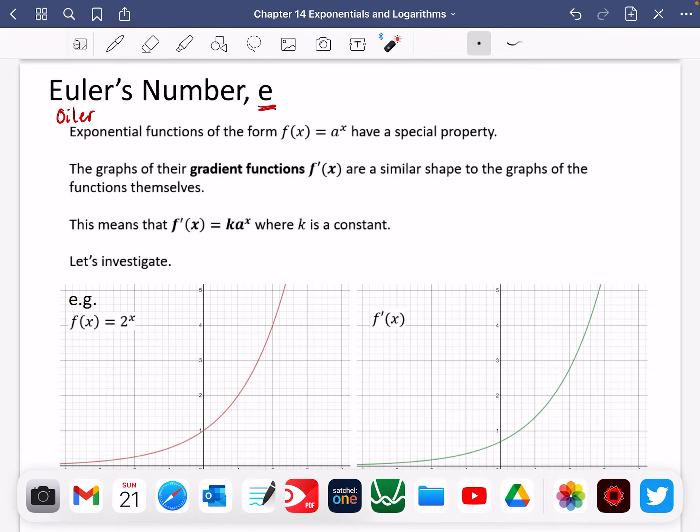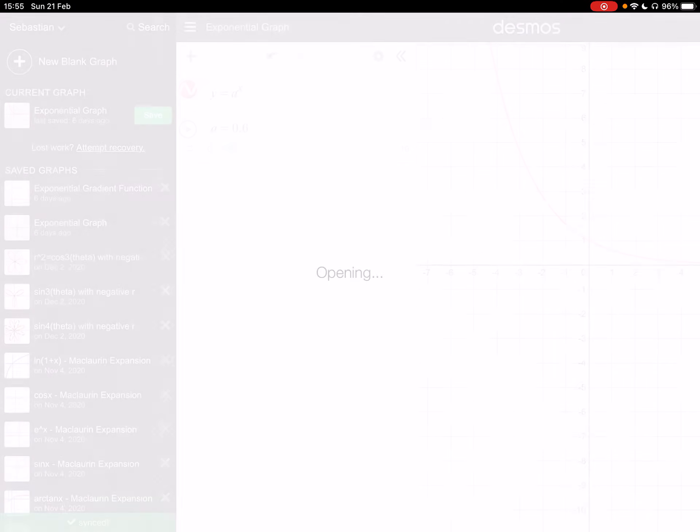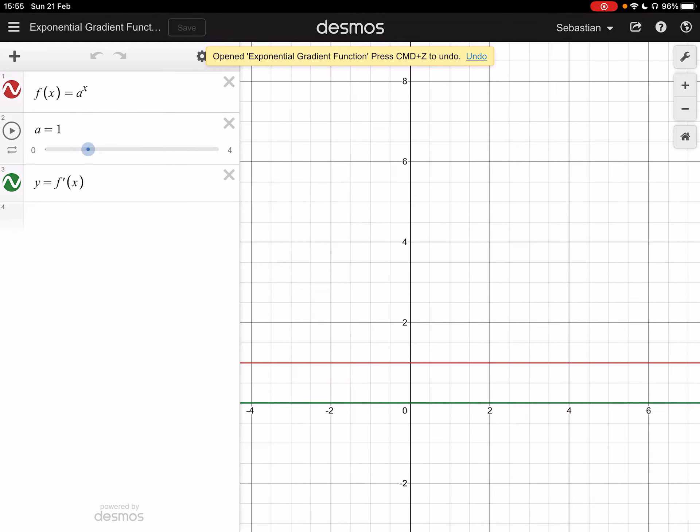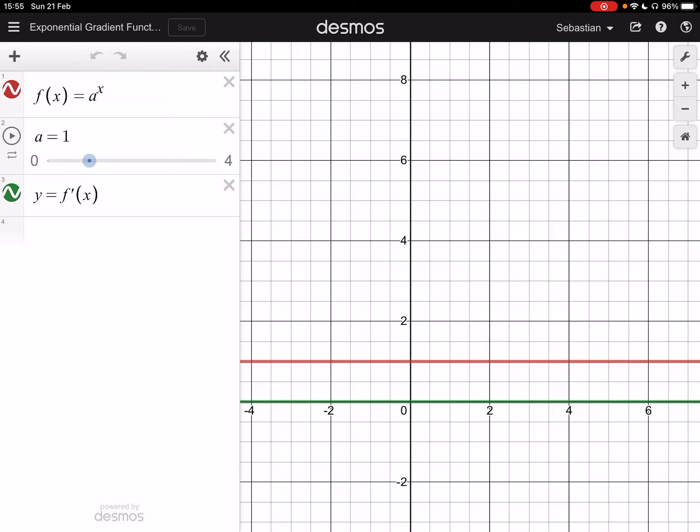So I'm going to go back to Desmos and I'm going to open this up so that we can investigate what is happening here. So at the top, I have got the red graph, I am going to make this bold, so it's a little bit easier to see. The red graph here is the exponential graph. And the green graph is the gradient function. At the moment, I've got that a is just equal to one. And when a is equal to one, you can see that the gradient is just zero the whole way. So the gradient function is just zero all the way across.